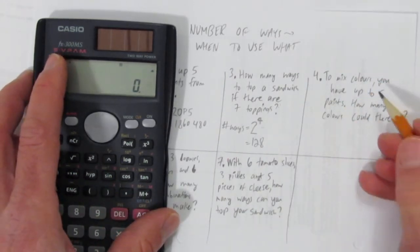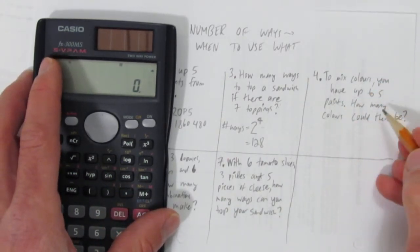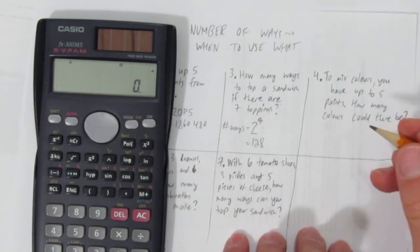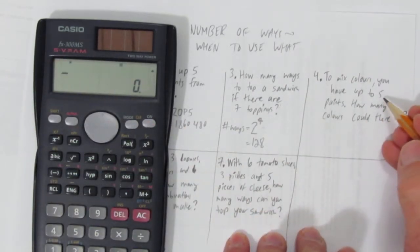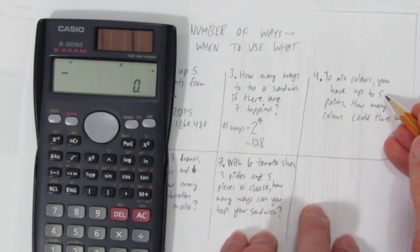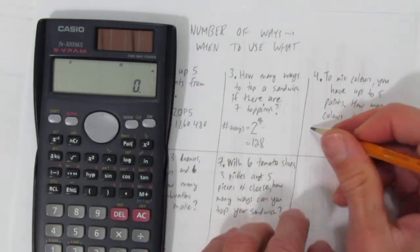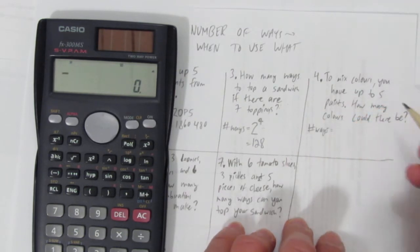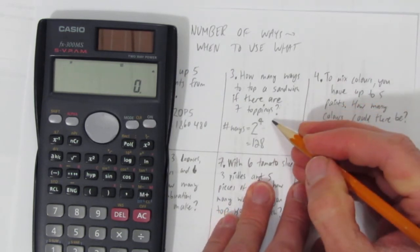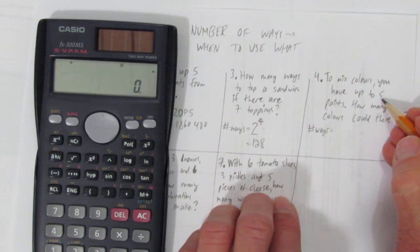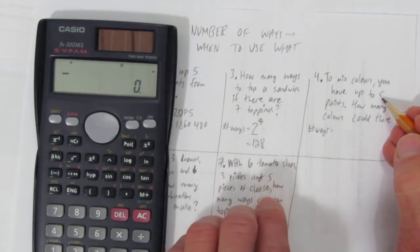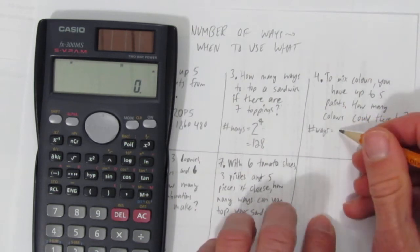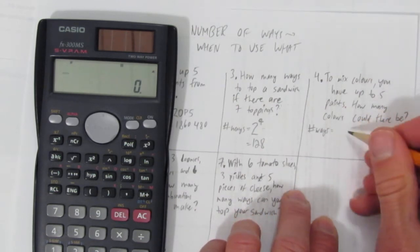Number four: to mix colors, you have up to five paints. How many colors could there be? It doesn't matter what the colors are. Try to avoid worrying about that. Instead, think about the situation. It's very similar to the last question. You can either have color one or not, color two or not, or three or not. But what you can't do this time is have no color choices.